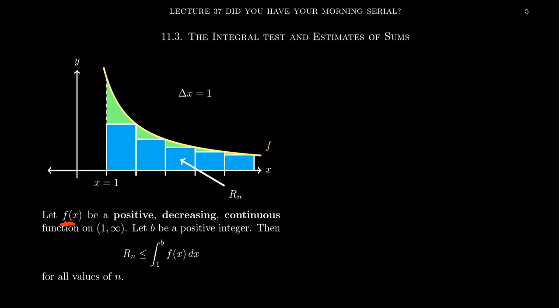Suppose we have a function f which has the following three properties: it's positive, meaning its entire graph will be above the x-axis; we want this function to be decreasing, meaning it goes from bigger to smaller as you go from left to right; and we also want it to be continuous, meaning there are no gaps in the function whatsoever. We require these assumptions on the domain 1 to infinity.